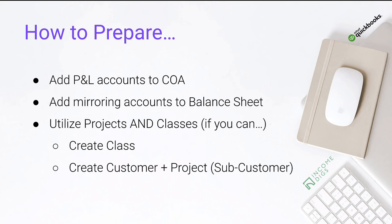We're going to add mirroring accounts on our balance sheet — the equivalent of whatever we're tracking on the P&L. We'll have similar categories on our balance sheet as well, under inventory, under an asset account. Then we're going to add our projects and classes. I'd like you to think about using both if you can. Projects are really good for looking at the profit and loss. Classes help us gain organization around our reports. You don't have to use both, but I recommend it.